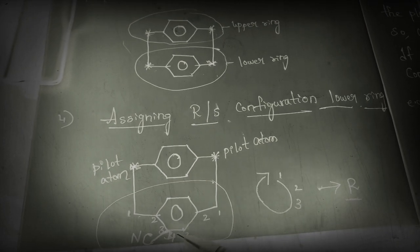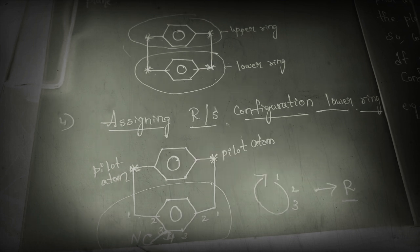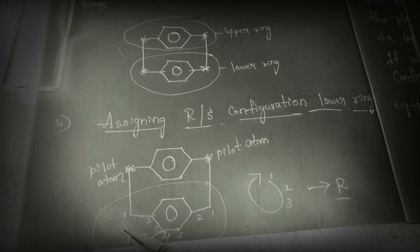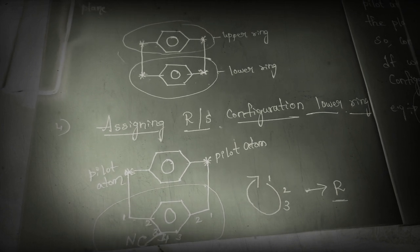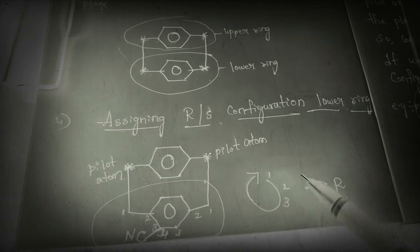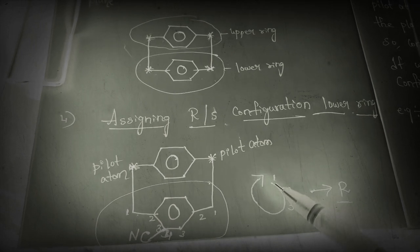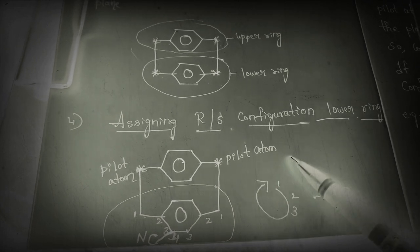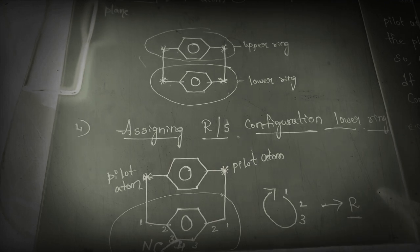From this side: one, two, three — the third carbon has the substituent. From the other side: one, two, three, four — the fourth carbon has the substituent. We take the side from which we get the lowest number. From this side, the third carbon has the substituent, so we draw an arrow: one, two, three. This gives a clockwise direction — clockwise means rectus, so here we get R.